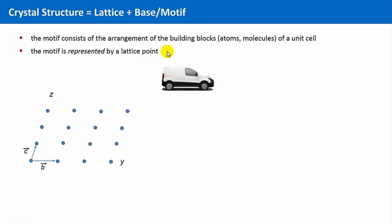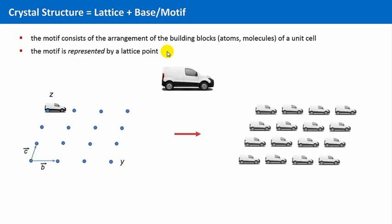If we apply this translational principle to this car, we get this arrangement of cars, like a parking place. This parking place can be regarded as a kind of a two-dimensional crystal, if the cars are regularly arranged and if the cars are all of the same type.